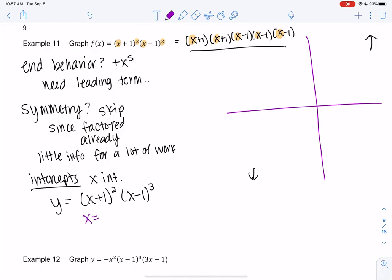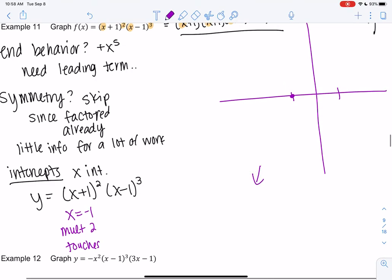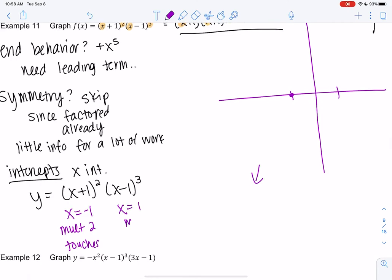But what's nice about this one is the intercepts are really easy to find because it's already factored. So the x-intercepts are going to tell us enough that we really don't care about symmetry. Part of being a good math student is really evaluating risk and reward. The risk for finding symmetry is not worth the reward. It's so much work for very little information. End behavior and intercepts will tell us enough. So let's see. We have x equals negative 1 with a multiplicity of 2, meaning it touches. So it could touch on top or bottom. I'm leaning towards the bottom since it looks like the graph is already down here. But we'll see what happens.